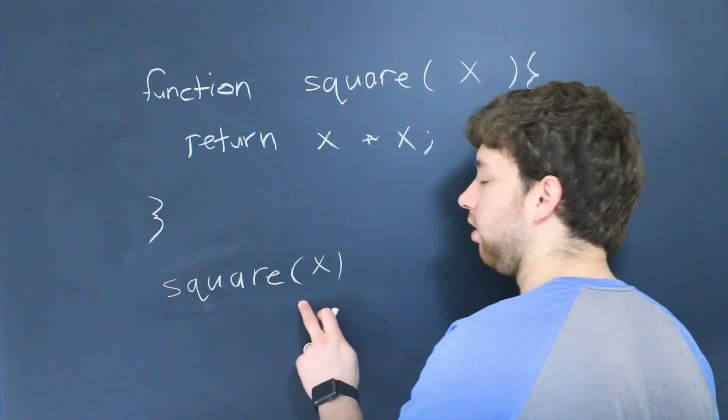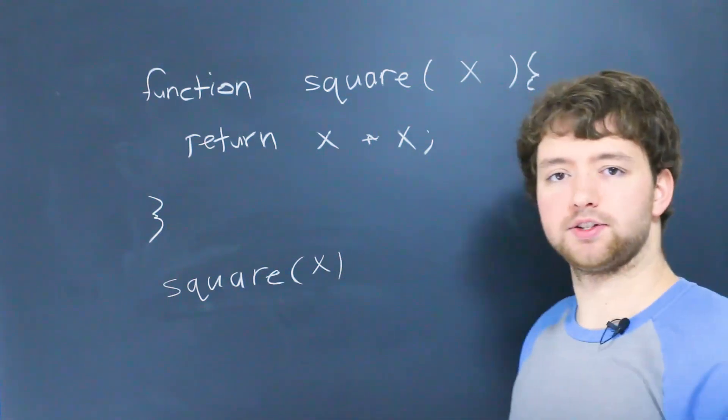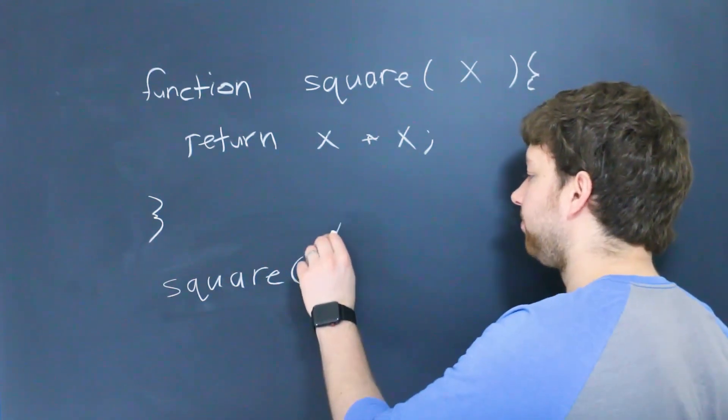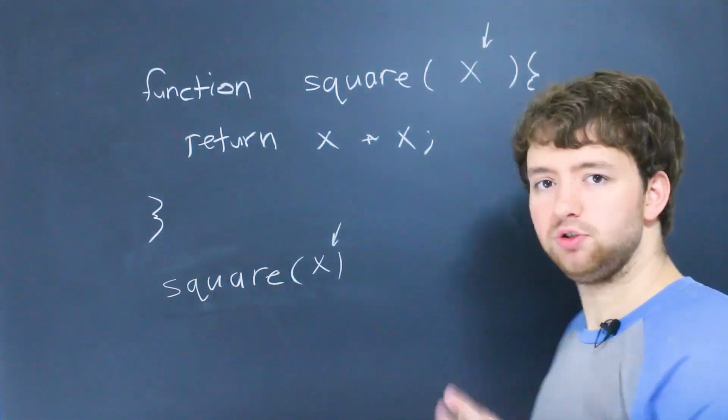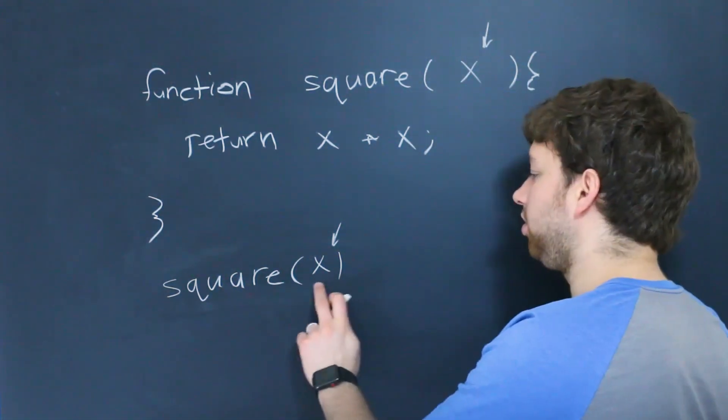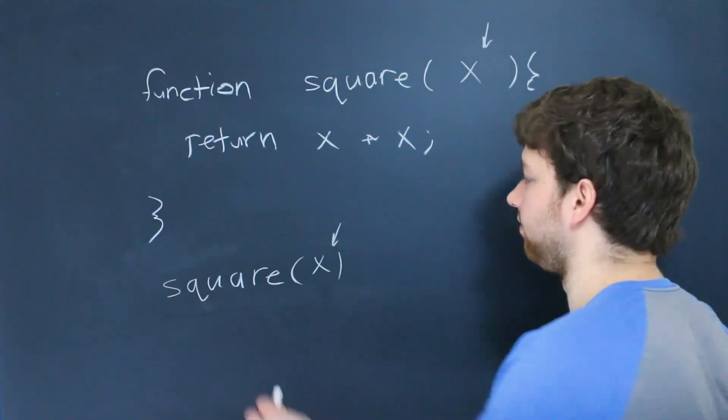So here we are calling square, and we're passing in x. The thing you need to understand here is that this x here is different than this x here. They are two separate variables. So you could use whatever variable name you want here. It just has to exist.